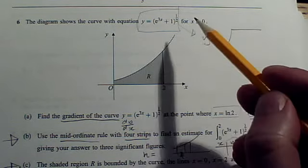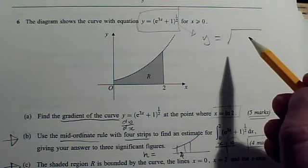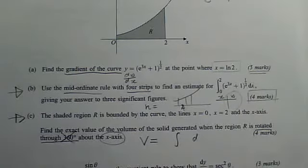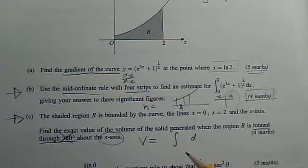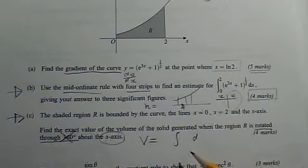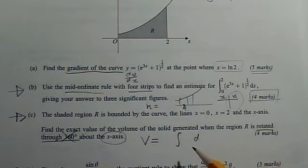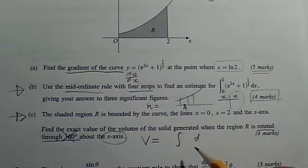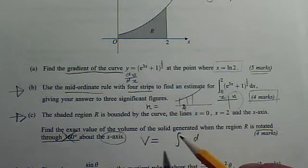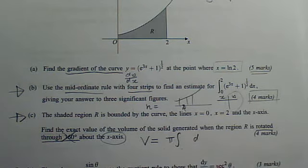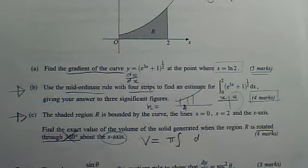So the fact this looks like a nasty function, after it's been squared, which is what you need to do in this formula, it looks like a much more straightforward function that you can integrate in a very straightforward way as a standard function. Don't forget to put the limits in. Don't forget your pi in front of your integral. And get your nice easy four marks for that.